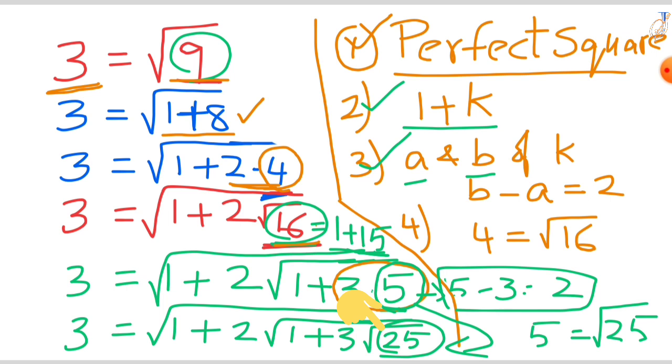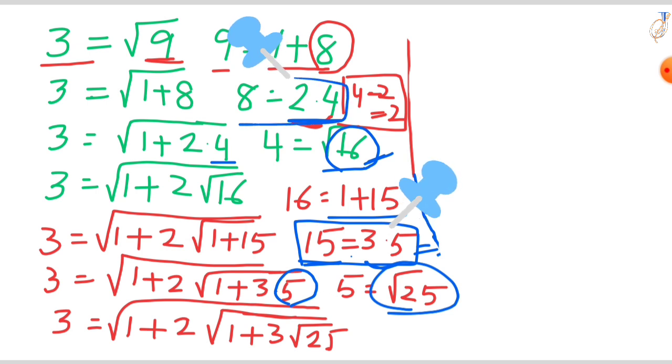Like that, we continuously repeat the process with each new perfect square obtained until we reach the original form. Now try to write the general form of this infinite series. When you find the factors, the difference is 2.